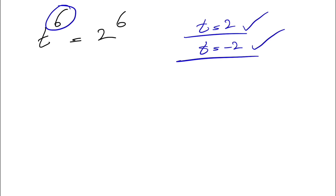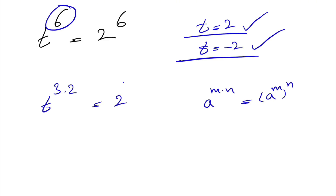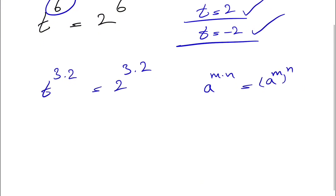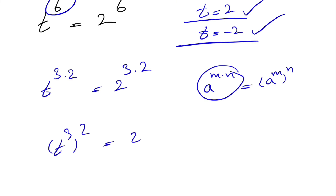I'm going to start by going over some laws of exponents. When we have a to the power of m times n, that equals a to the m, to the n. So instead of t to the 6, we can write t to the 3 times 2. On the right side we do the same thing: 2 to the 3 times 2, which gives 6. So now we have t cubed, squared, equals 2 cubed, squared.